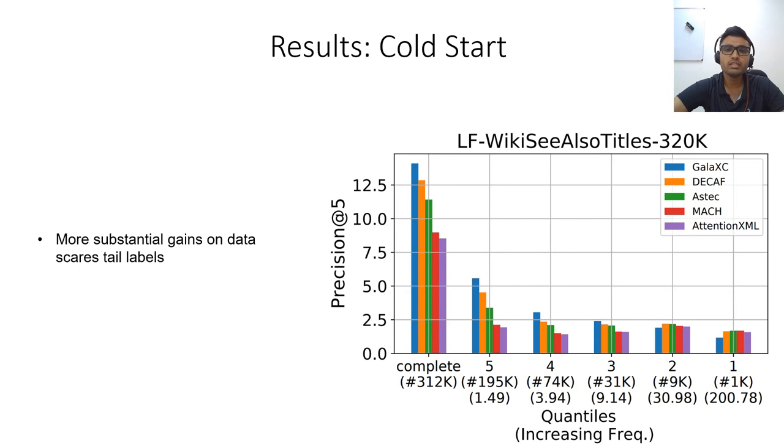Further, as you can see in this graph, Galaxy's better predictions on tail labels are the major contributor to Galaxy's performance gain over baseline methods.